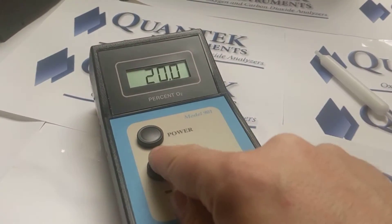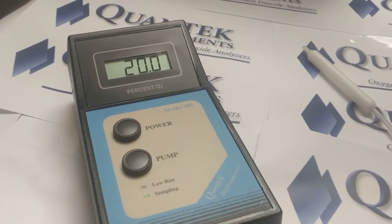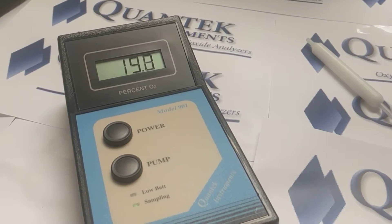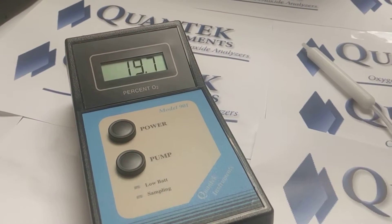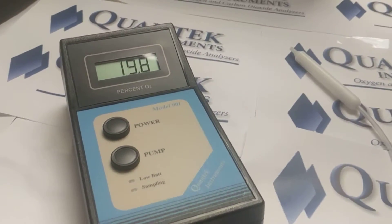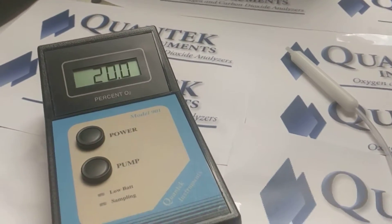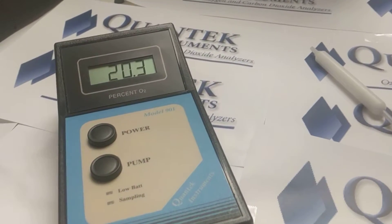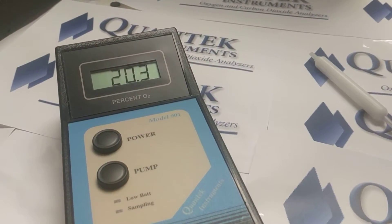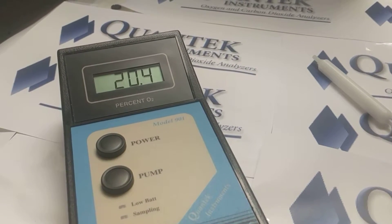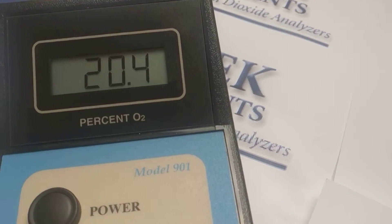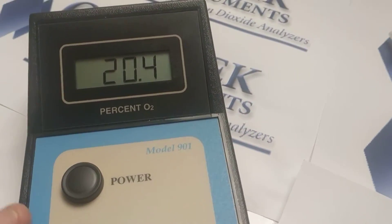So the first thing we're going to do is press the pump button and make sure before we do any adjustments, we're going to make sure that there is a fresh sample in the instrument. Now this instrument was just handed to me. I have no idea if it's actually been calibrated, but no worries. We'll be able to calibrate it here and demonstrate it for you. So as you can see, the reading is stabilized at 20.4, so this needs to be adjusted.